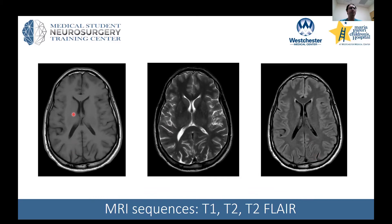On the left here is a T1. I like to think of T1 as the most anatomical sequence. On a T1, the white matter is white, the gray matter is gray, and the ventricles — the fluid — is black. Kind of your normal, what you'd normally expect.